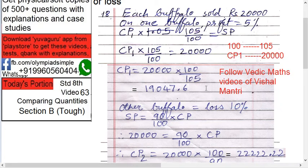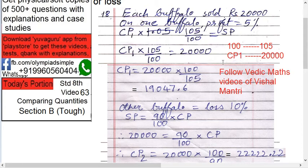One point I noted is that this concept — how CP1 into 105 upon 100 works — is difficult to understand. Always follow a simple logic: suppose I buy something for 100, how much will I sell it for with 5% profit? That's 105. Now I want CP1: at what price should I buy so I can sell for 20,000? Cross-multiply: CP1 into 105 equals 20,000 into 100. When 105 comes down, the same thing happens — that's the logic.